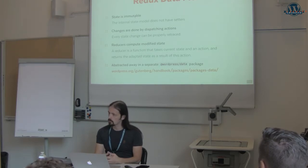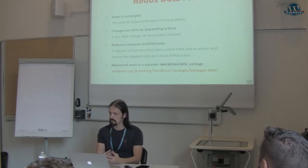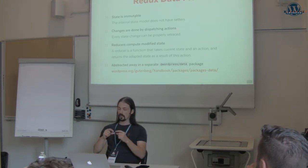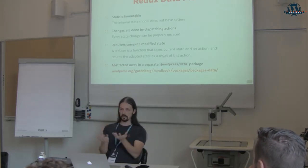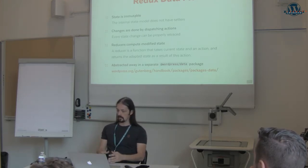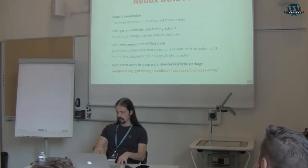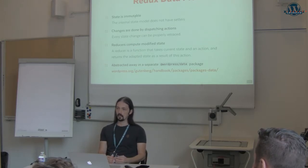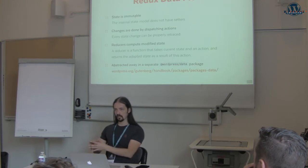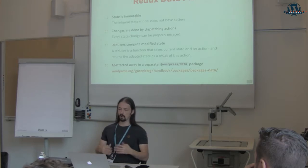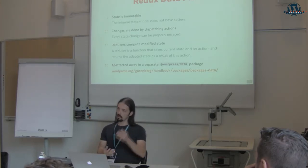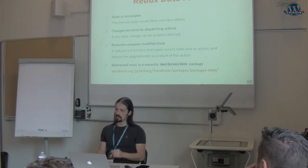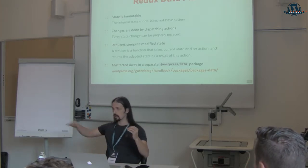This has all been abstracted away for Gutenberg in the WordPress slash data package, so that you don't need to tie yourself directly to Redux, but more importantly to build an extension that works not only inside your single application, but that is modular — so that the Gutenberg state can interact together with the state in plugins and themes. Redux is built traditionally for a single page app, but in WordPress each plugin is built in an isolated way. WordPress core will be compiled and each plugin will be compiled in its own JavaScript application, and the WordPress data package is built to enable the Redux data flow across multiple of these applications.